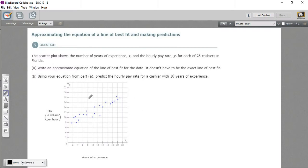In this problem, we have a type of graph called a scatter plot, where there are all these dots kind of scattered around.